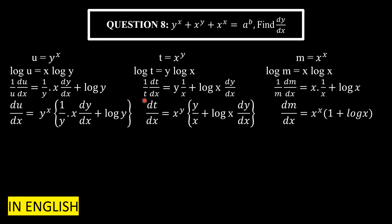Take t to the right-hand side — it moves to the numerator. Replacing t with its original value x^y, we get: dt/dx = x^y · [(y/x) + log(x)·(dy/dx)].